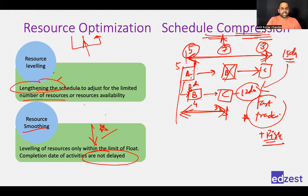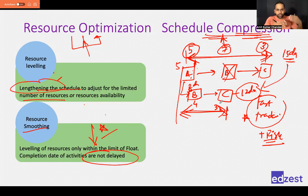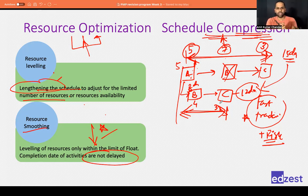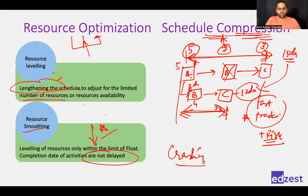The second schedule compression technique is crashing. If you cannot fast-track — for example, you must lay the concrete floor, wait for it to set, then work on the wall — there is a technical mandatory dependency that prevents parallel work. In that case, you add more resources: instead of two people pouring concrete, use four people so you finish it faster. Crashing means adding more resources to complete an activity faster.